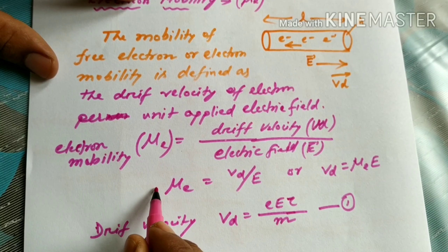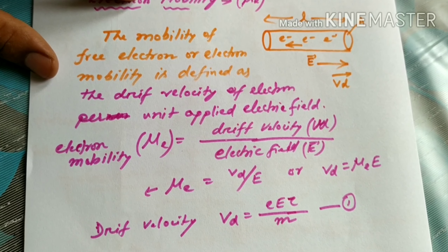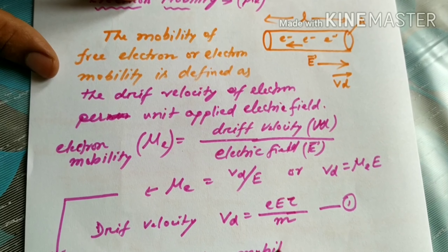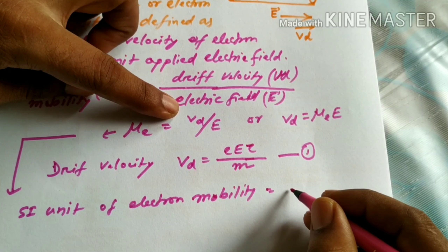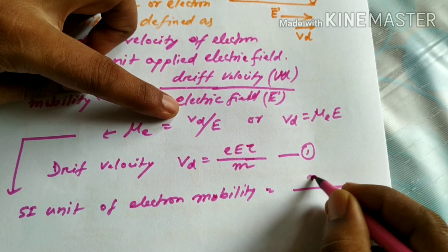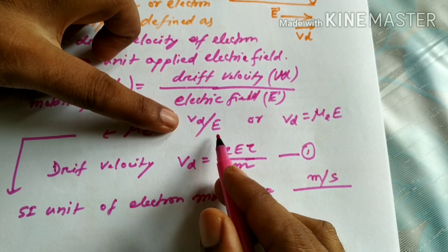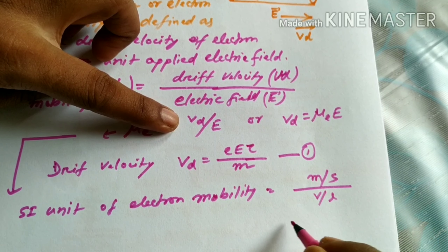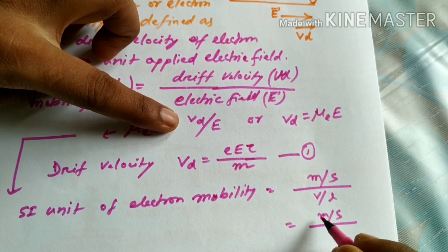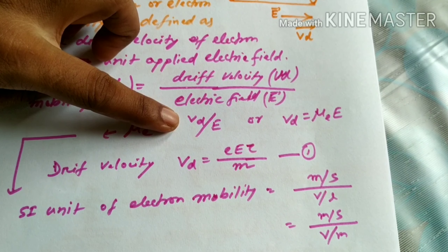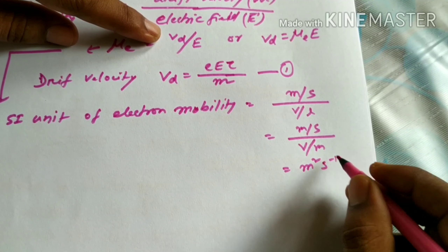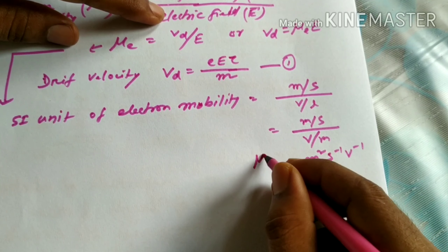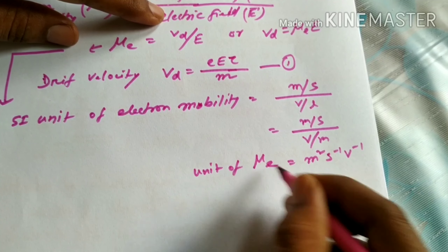Let me consider the SI unit of electron mobility. Since mu of E equals Vd divided by E, and drift velocity Vd is in meters per second, and electric field E equals V divided by L — that is, volts per meter — the SI unit works out to meter squared per second per volt, or m²/V·s.